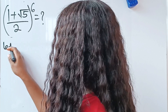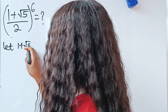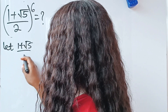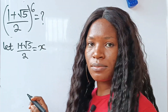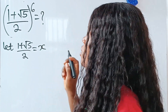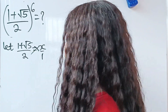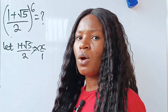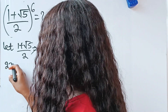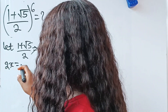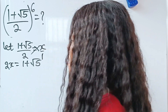We are going to let (1 + √5) / 2 be equal to x. So that way we can cross multiply. When we cross multiply, we are going to have 2x is equal to 1 + √5.